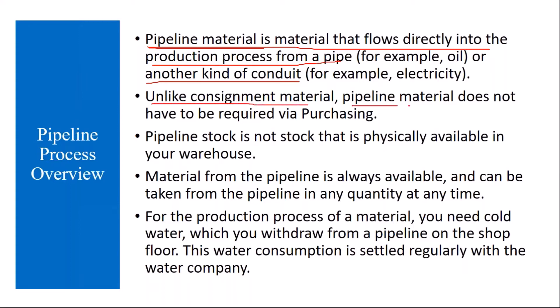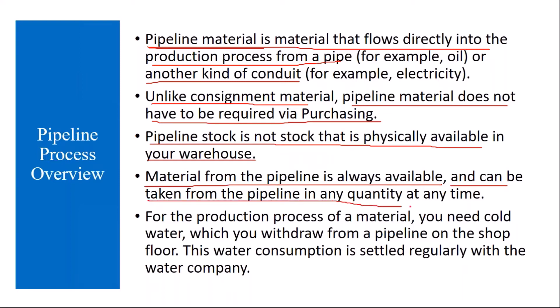Unlike consignment material, pipeline material does not have to be procured via purchasing. The major difference is you will not purchase it directly, because it is always assumed to be available all the time — electricity, for example, should be available for you all the time. Pipeline stock is not stock that is physically available in your warehouse; it is not a warehouse material. They will not store it physically. It is available all the time in a pipe. Material from the pipeline is always available and can be taken in any quantity at any time.